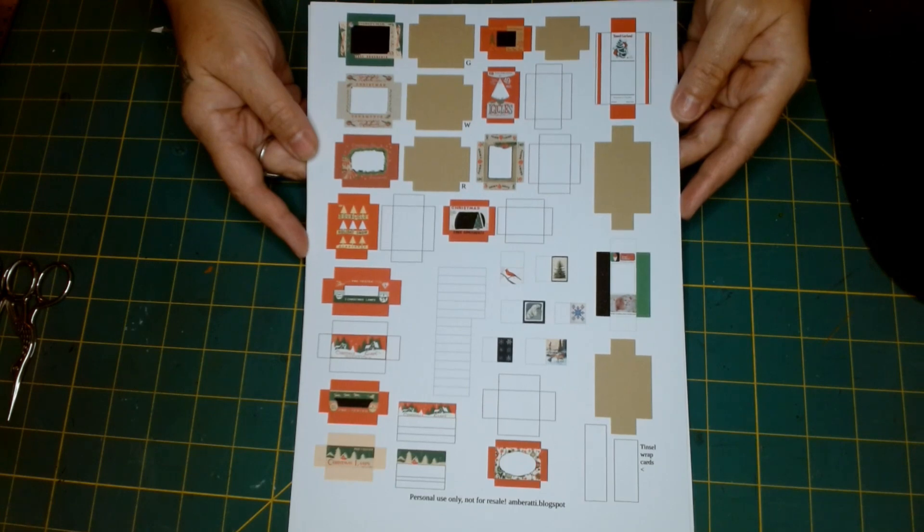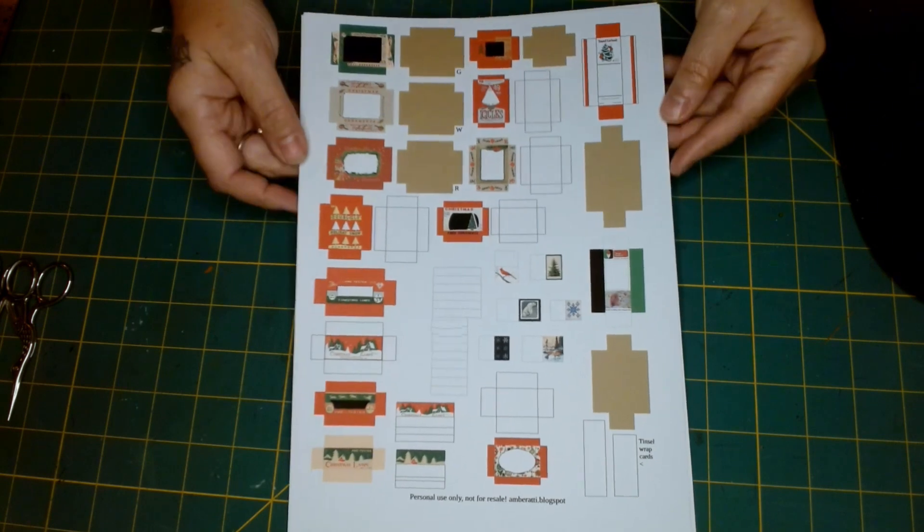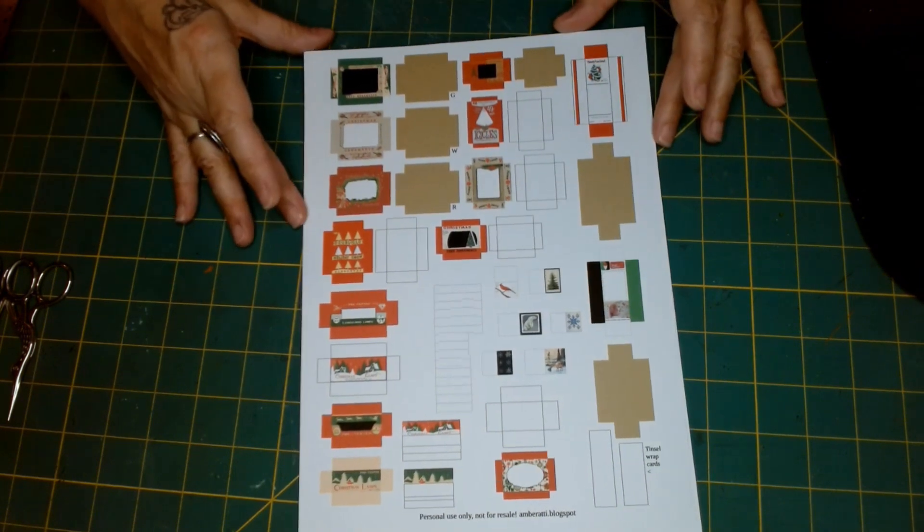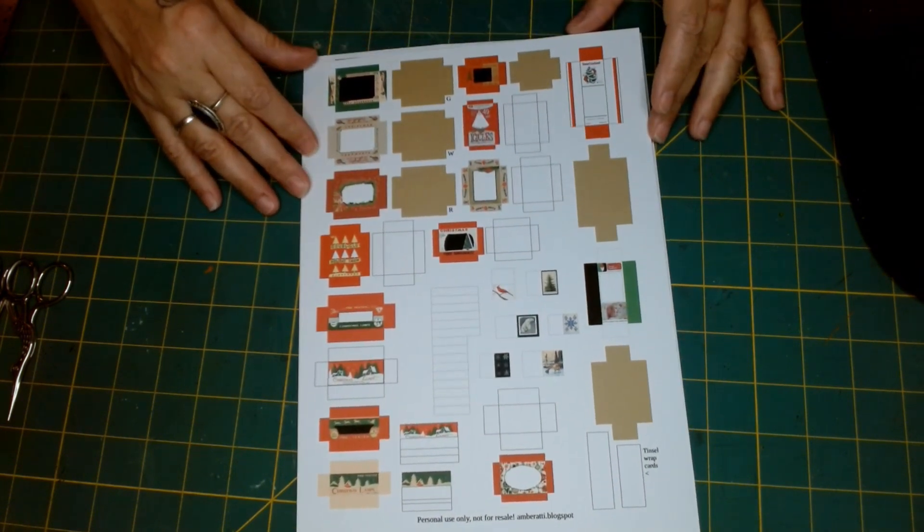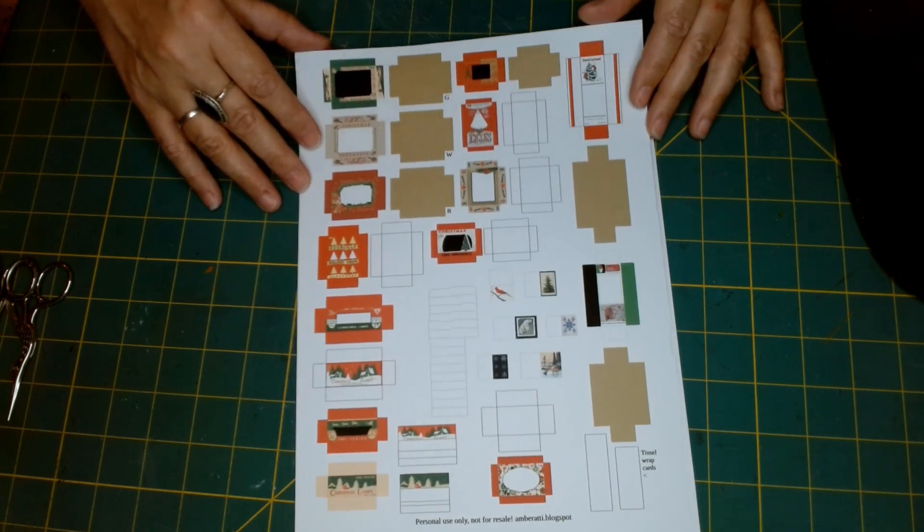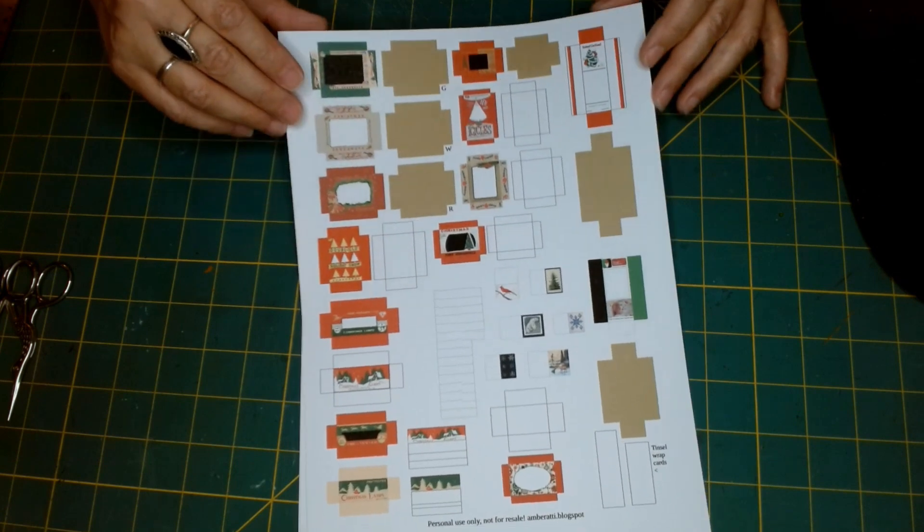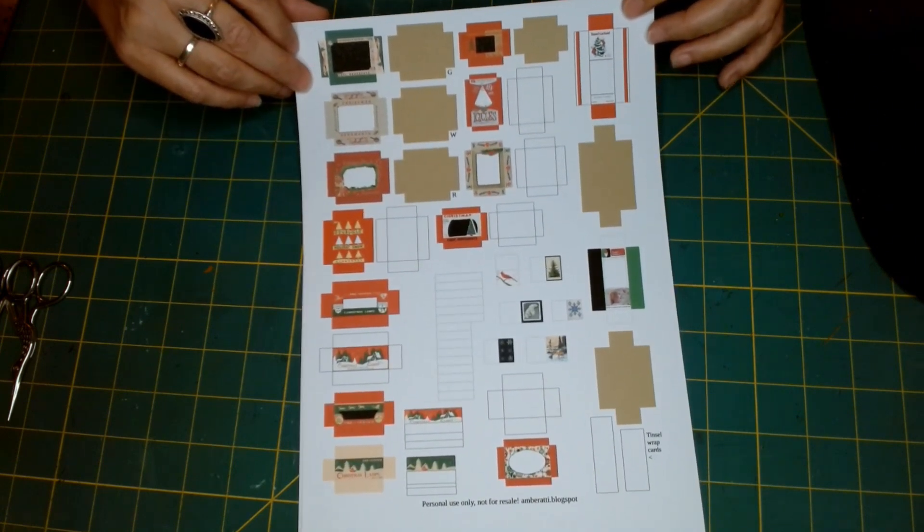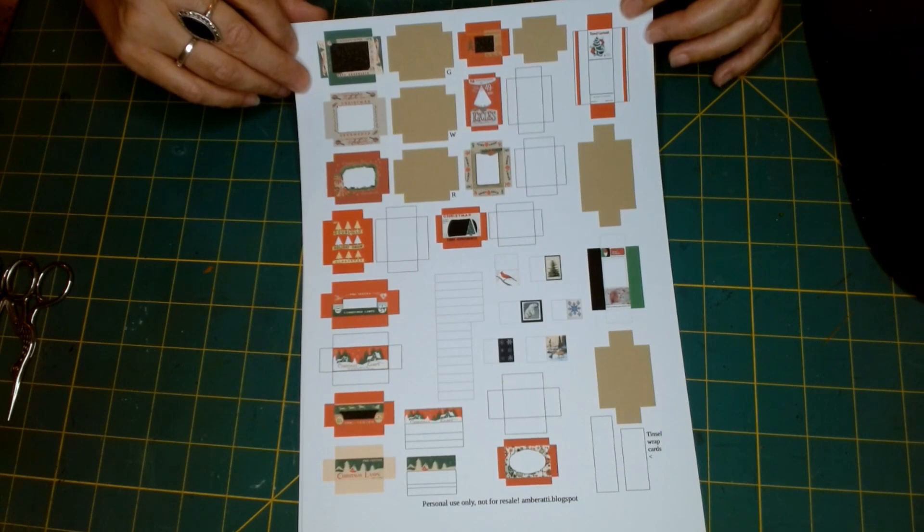Just scroll down to the words that say Christmas boxes underneath the first image. It may be blue, it may not be, depending on what kind of device you're using to log in. Just click on those words and this PDF will pop up. And if you've missed any of the previous days, you'll find a link to the playlist in the description box as well.